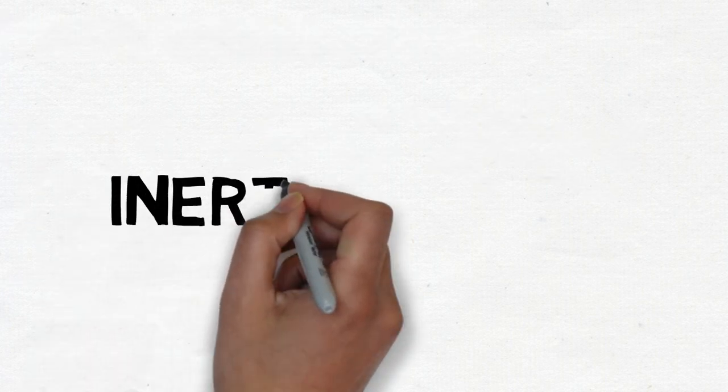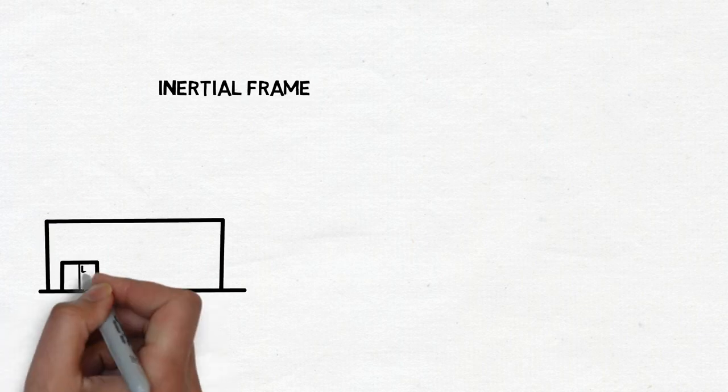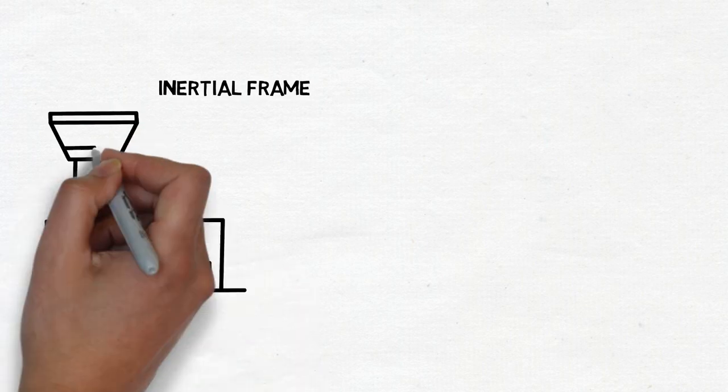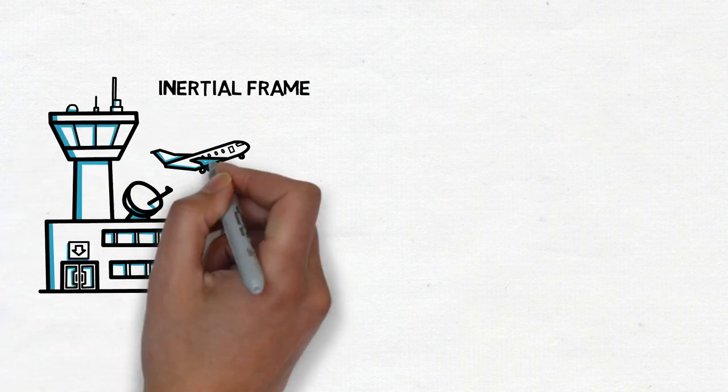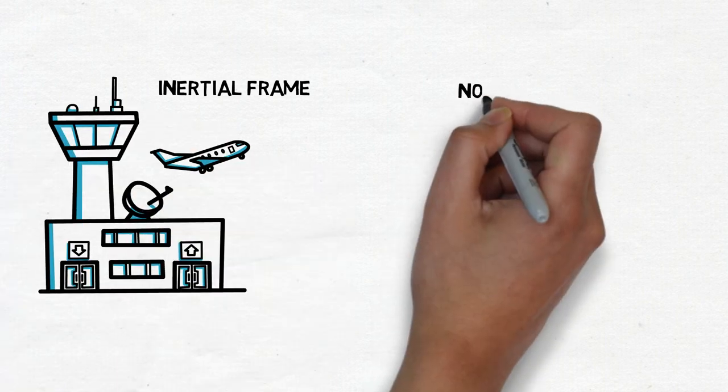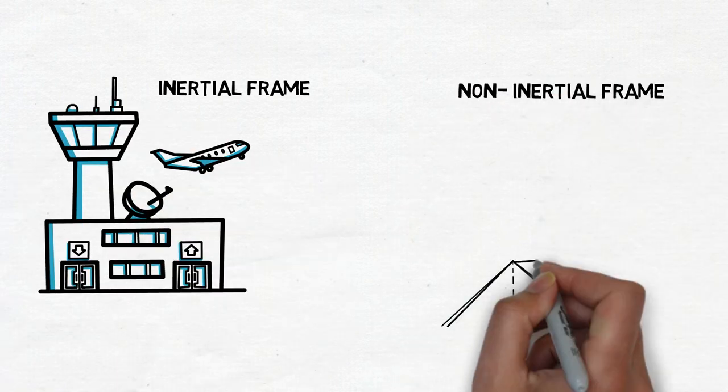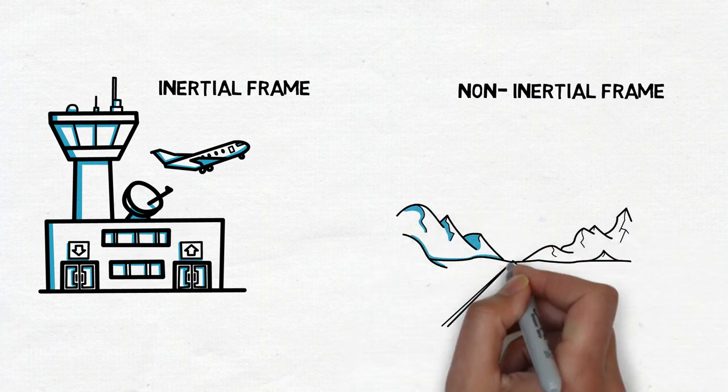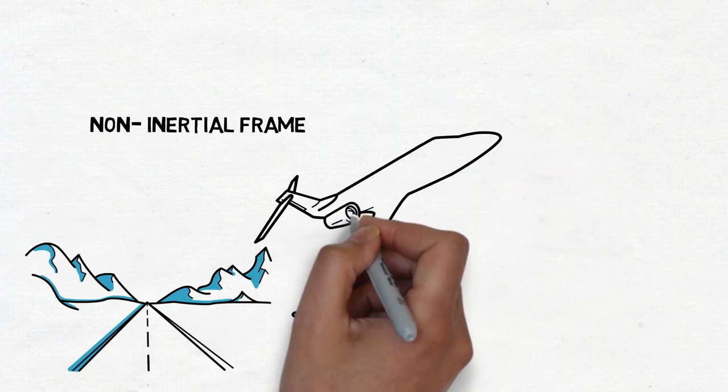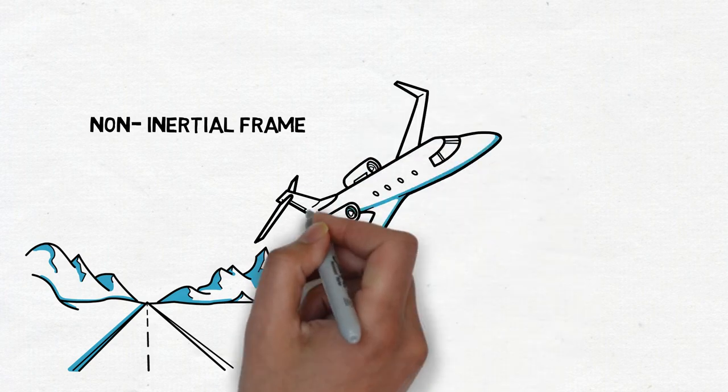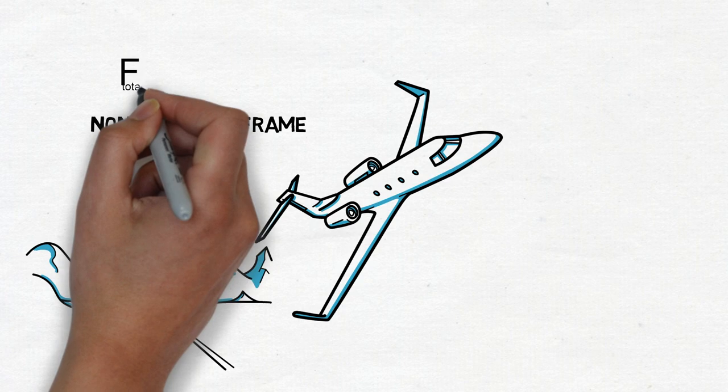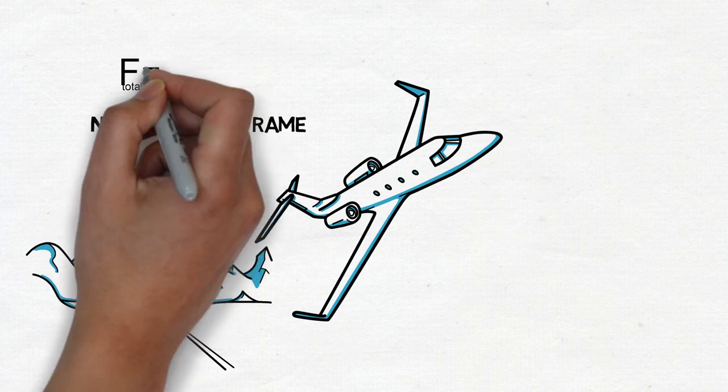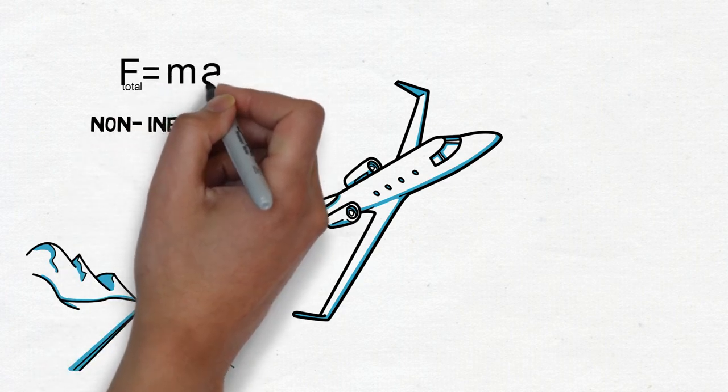An inertial frame is one where there is no acceleration, so either remains stationary or moves at constant velocity. Newton's laws of motion apply, for example an airport. A non-inertial reference frame moves in a non-uniform or accelerated motion, so when the plane leaves the runway it is accelerating, so it is a non-inertial reference frame. Here Newton's laws of motion do not apply. Fictitious forces are introduced so that Newton's second law is valid in a non-inertial frame.